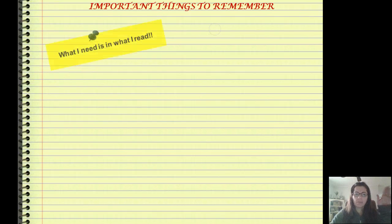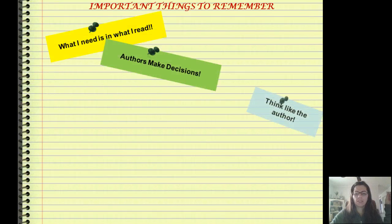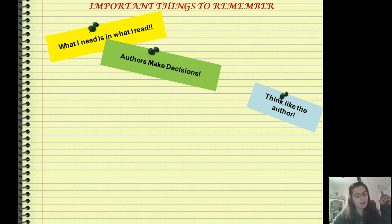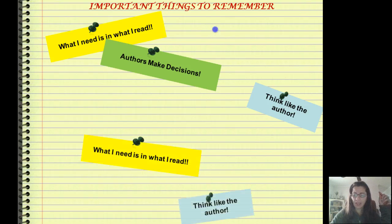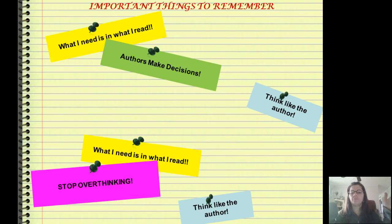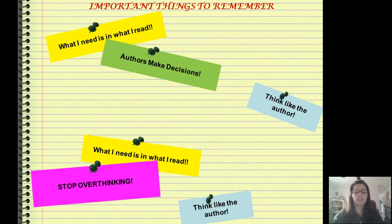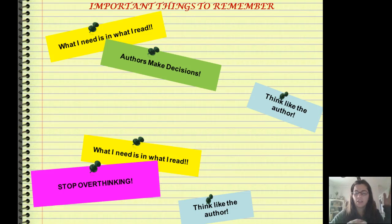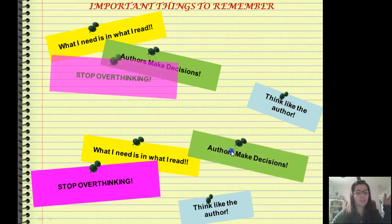So, important things to remember: What I need is in what I read. Authors make decisions. Think like the author. And finally, stop overthinking. What I need is in what I read — we're not looking to the sky for answers. We're going to understand that authors make decisions, so when we're asked a question about something an author wrote, we need to find the answer in the text. Think like the author by asking why, and please stop overthinking.